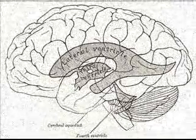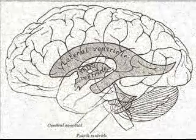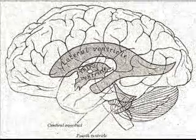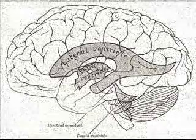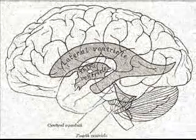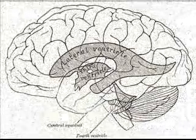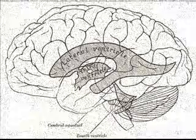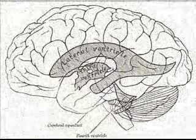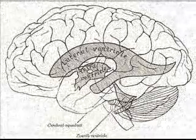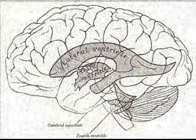The fourth ventricle has a characteristic diamond shape in cross-sections of the human brain. It is located within the pons or in the upper part of the medulla. CSF entering the fourth ventricle through the cerebral aqueduct can exit to the subarachnoid space of the spinal cord through two lateral foramina of Luschka and a single midline foramen of Magendie.